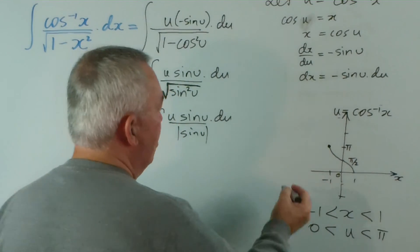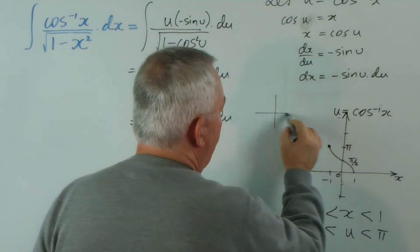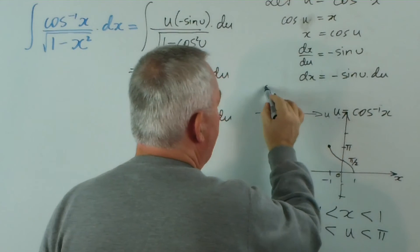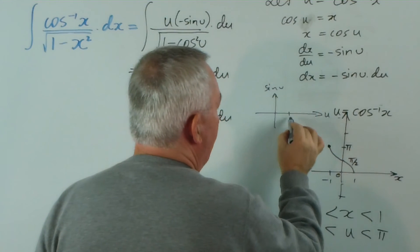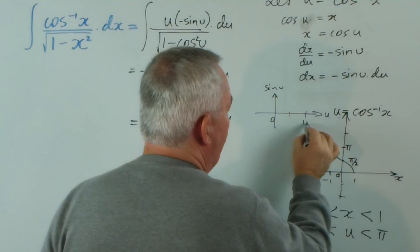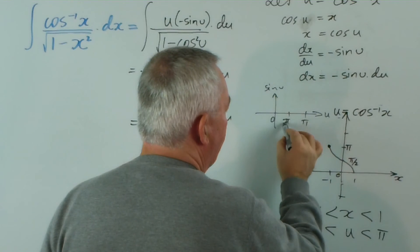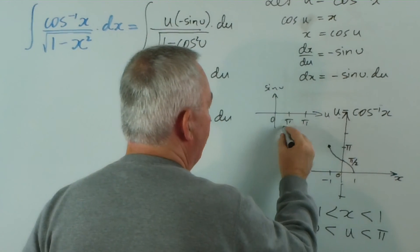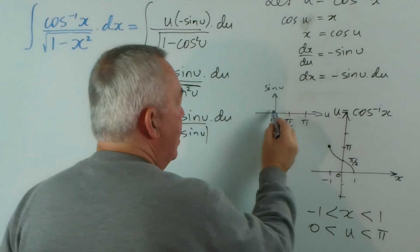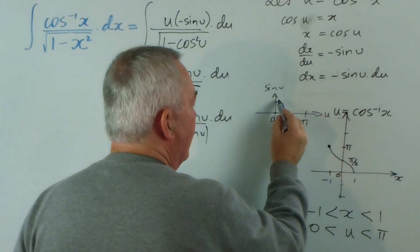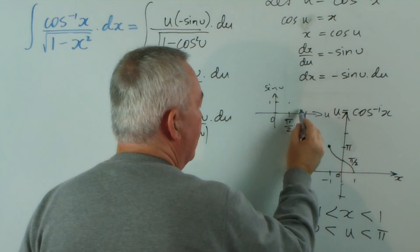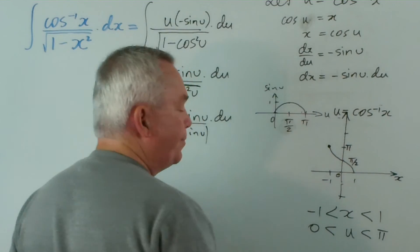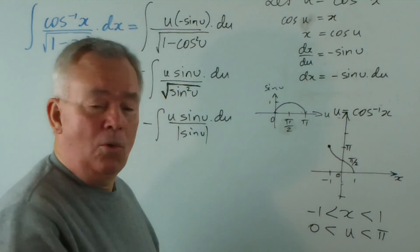Here's where I wish I had a much bigger board. But if I have u and sine u, and I go from zero to pi, pi on two... we know that the sine function goes like that. In other words, it's always positive.